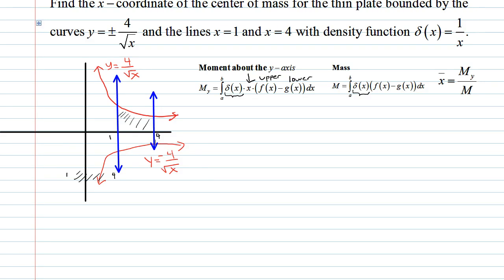And so now we just have to plug into the formulas. Let's do the moment about the y-axis as the integral from 1 to 4, density function 1 over x, x from the formula, and then the upper function 4 over root x minus the lower function negative 4 over root x. And that integral's with respect to x.